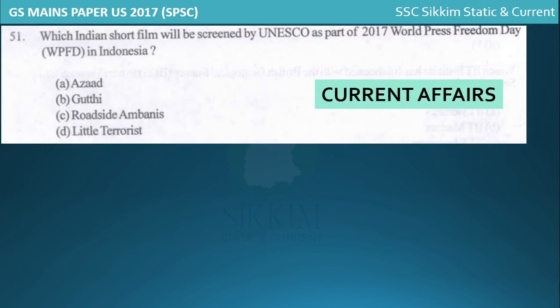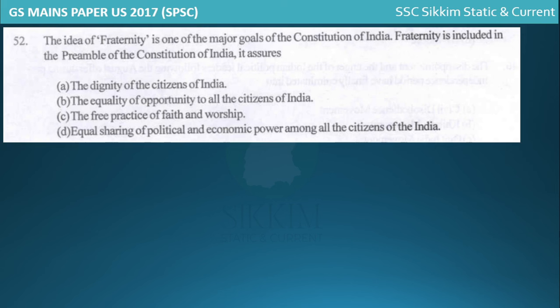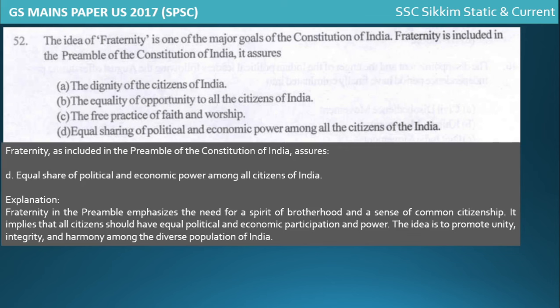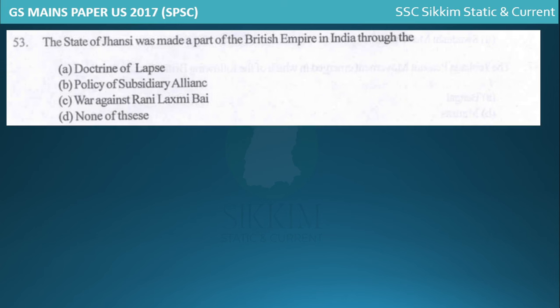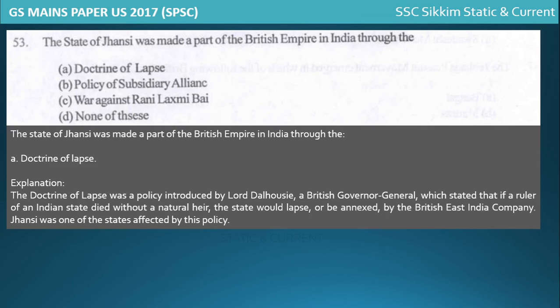The idea of fraternity is one of the major goals of the Constitution of India and is included in the Preamble. The state of Jhansi was made part of the British Empire through the Doctrine of Lapse, introduced by Lord Dalhousie. Under this policy, if an Indian state's ruler died without a natural heir and without British permission to adopt, the state was annexed by the British East India Company.